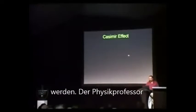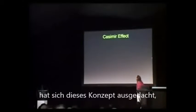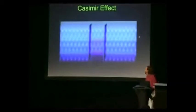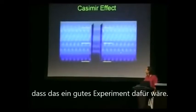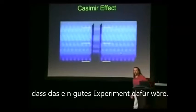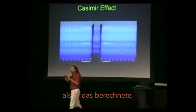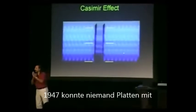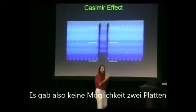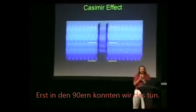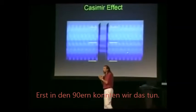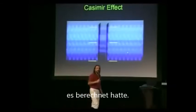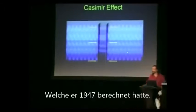Professor Dr. Casimir came up with this concept in 1947. He thought it would be a good experiment to put together, but when he made the calculation, he realized the plates would have to be microns apart. In 1947, nobody could mill micron-precision plates, so there was no way to get two plates that close together. It took until the nineties before we were able to do that. And when we did, the plates pushed together exactly as Casimir had calculated they should, based on the vacuum density he calculated in 1947.